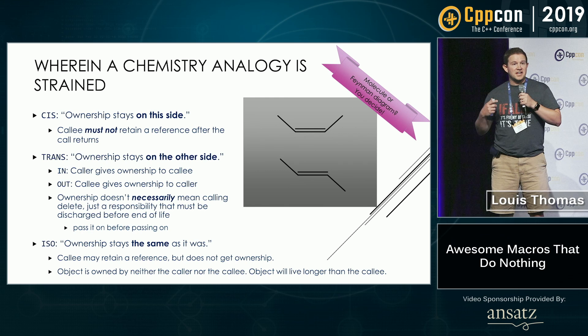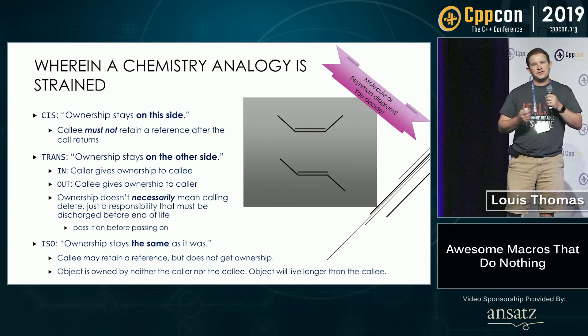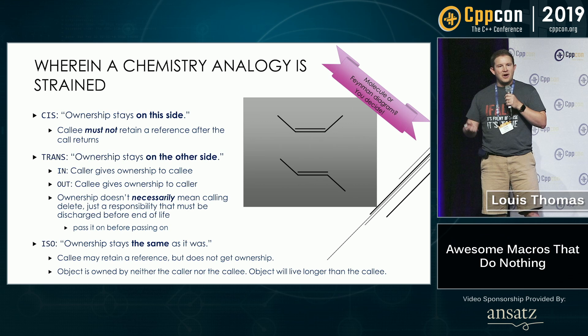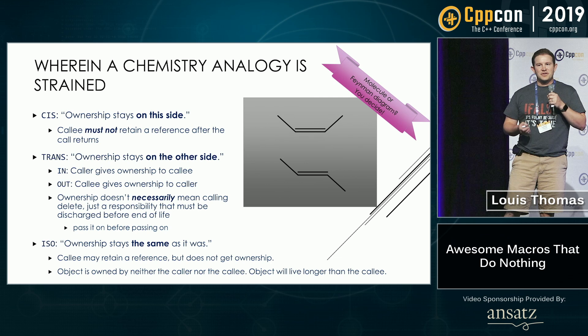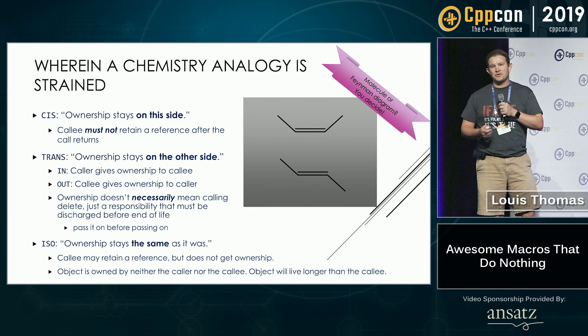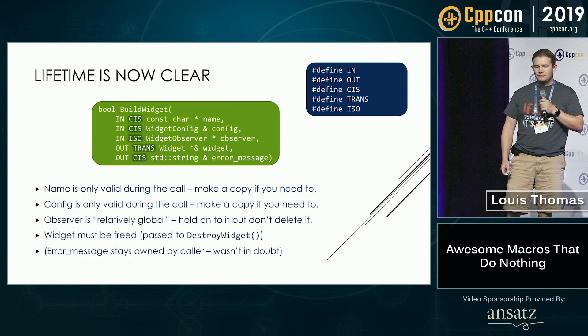Iso means 'the same,' so ownership stays the same as it was — whoever owned it before the call owns it after. What this means is that the callee may retain a reference but does not get ownership. Probably the caller didn't really own it, and so the callee doesn't really own it either. Basically, it's a promise that this object will live longer than the callee receiving it — so you don't have to worry about it.